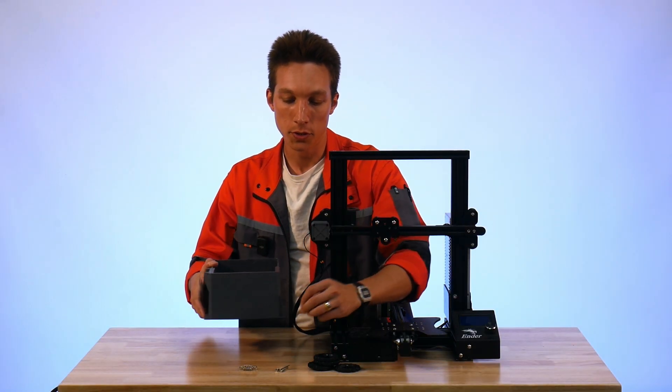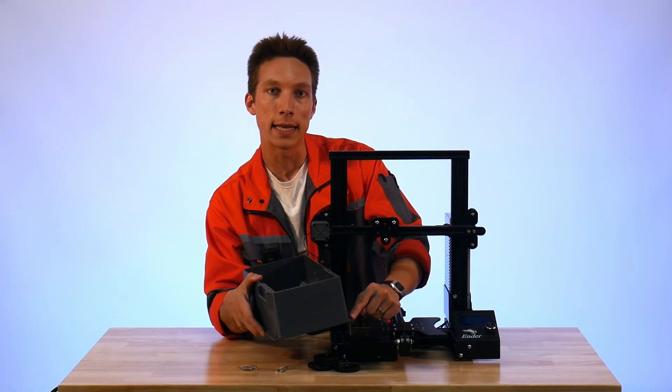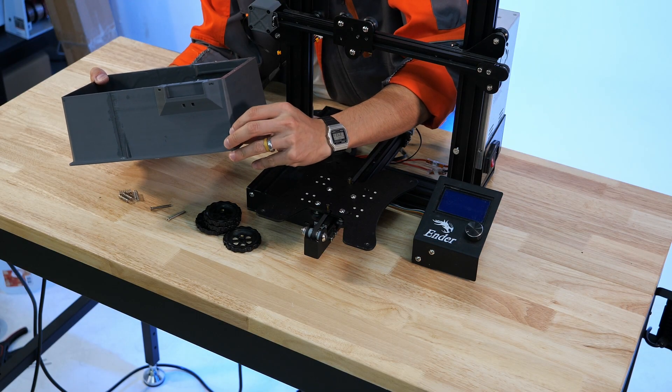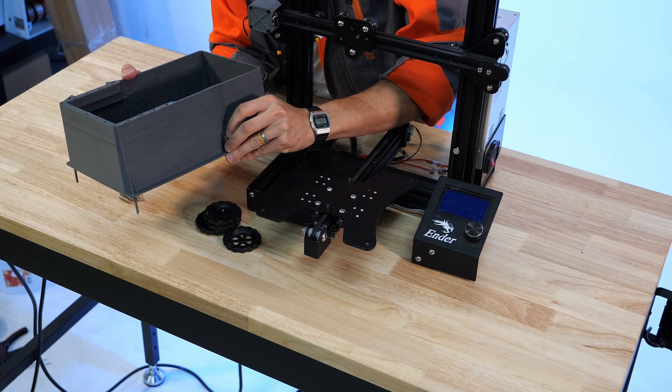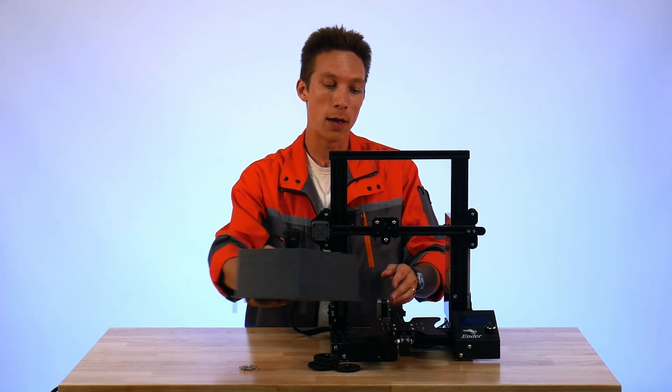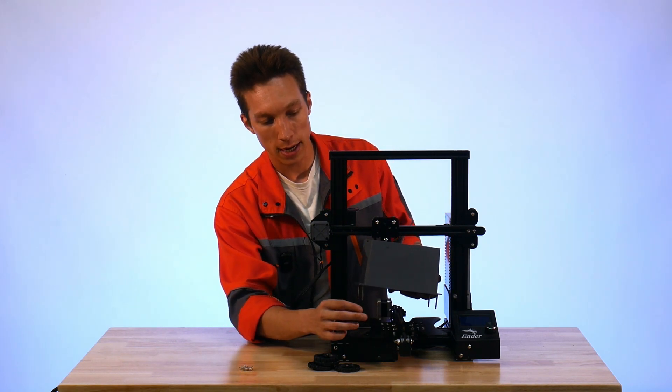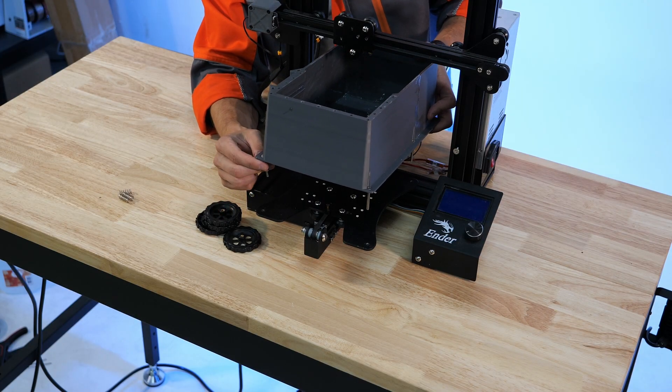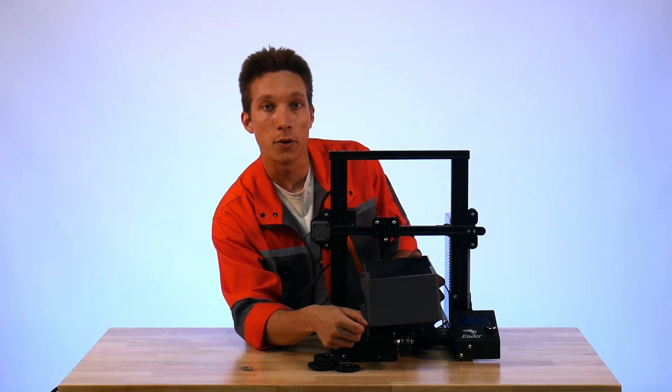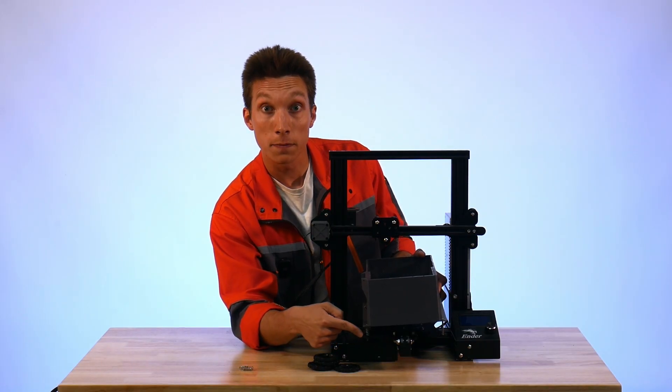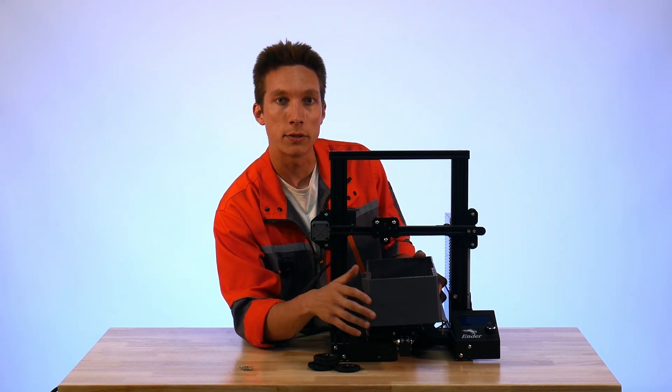We'll start by taking our screws and installing them one at a time into the holes on the vat itself. From here we'll take the vat and position it over the bed of the machine. We'll then take our springs and install them over the screws and find the first mounting hole. Once you've found the first mounting hole, it's easy to locate the other screws with their springs over those mounting holes.